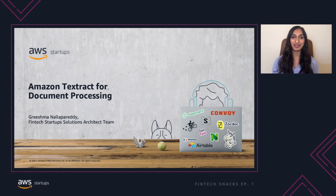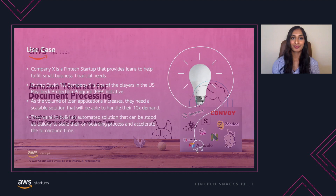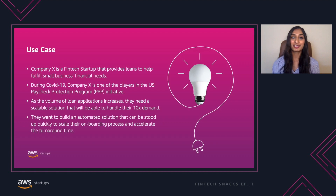Hi everyone and welcome to the very first episode of Fintech Snacks, a series where we take a look at common fintech startup use cases and how to architect for them. My name is Grishman Alperetti and I'm a Solutions Architect on the fintech startups team at AWS. Today we're going to be exploring the use case for a loans application. Let's take a look at our customer use case.